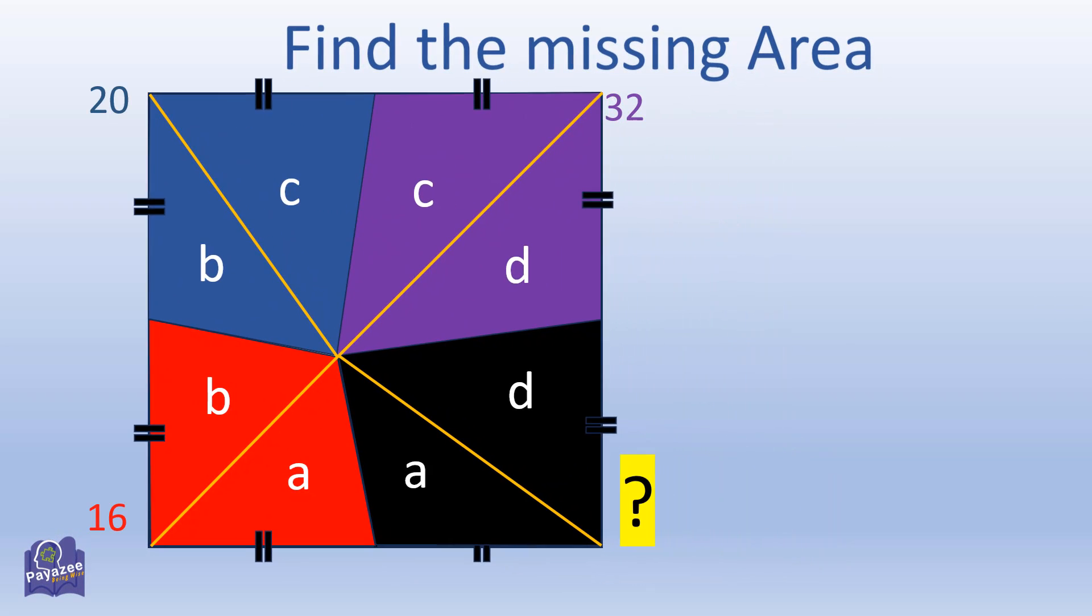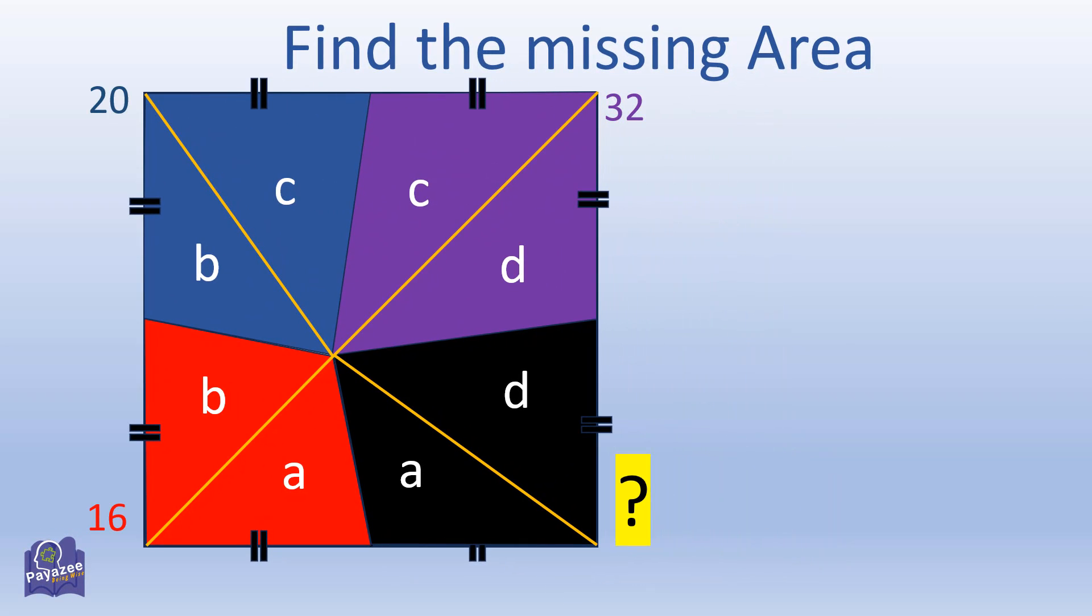I would need some space. Now let's find the missing area with the given information. A plus B equals 16, B plus C equals 20, C plus D equals 32, and A plus D is equal to question mark.